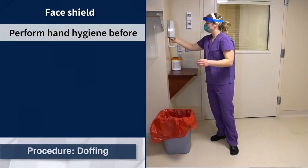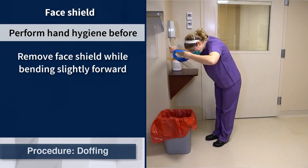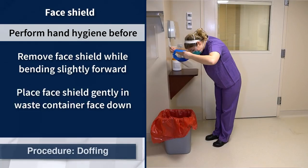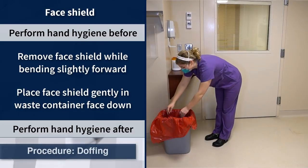Perform hand hygiene. To remove the face shield, bend slightly forward and grasp the headband from the sides or back of the head. Pull the band forward, over and away from the face. Alternatively, pinch the front of the visor and pull it off from the front to avoid placing hands behind the head where they cannot be seen. Once removed, place the face shield gently into the trash face down and perform hand hygiene.